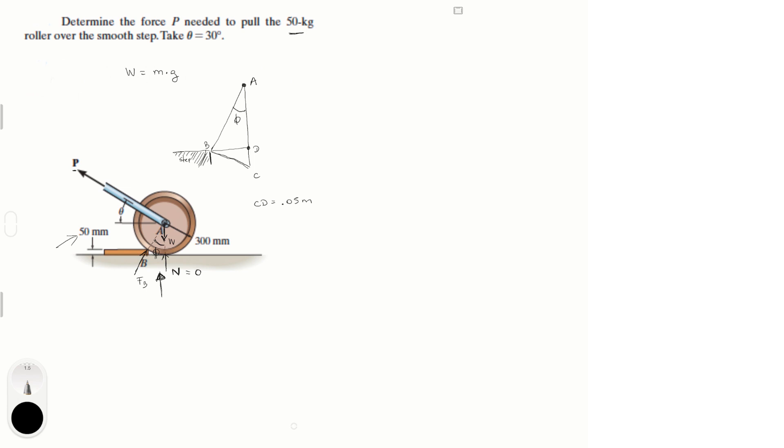We also know that the radius of the roller over is 300 millimeters or 0.3 meters. So the radius is 0.3 meters. But the radius is also equals from A to C.